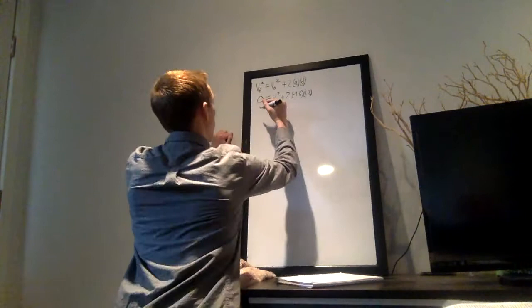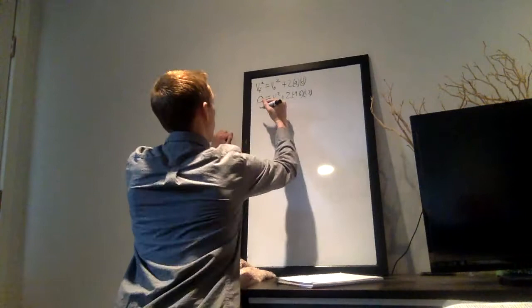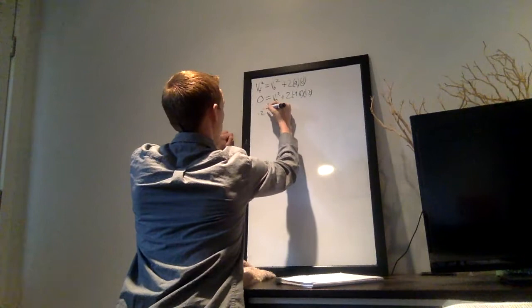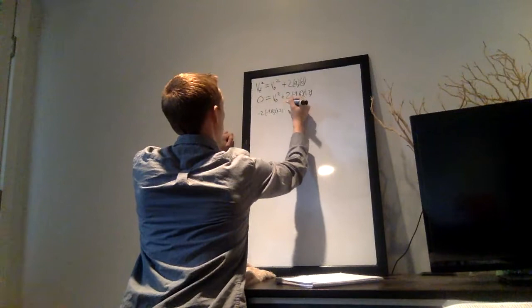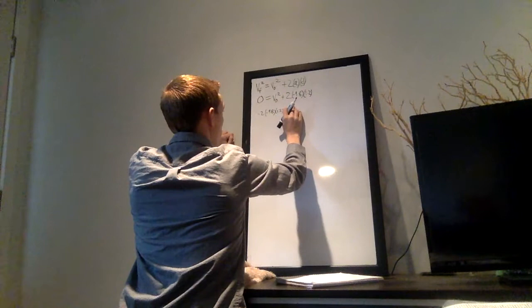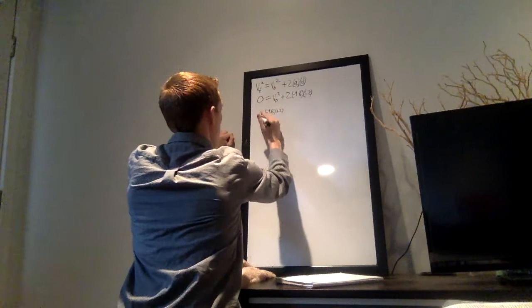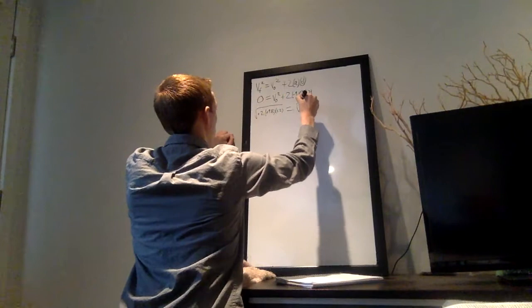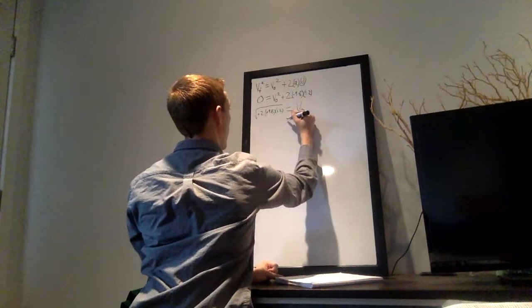And then we're just going to solve for V. So we subtract this part over, negative 2 times negative 9.8 times 1.2. And since we have two negatives here, these are going to cancel out. We're going to take the square root of this, which will give us our initial velocity. Plug it into a calculator, and that's 4.85 meters per second.